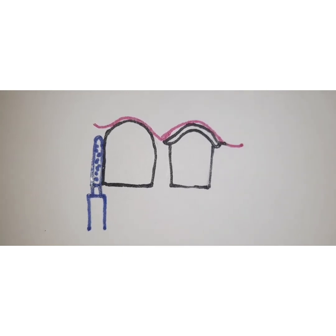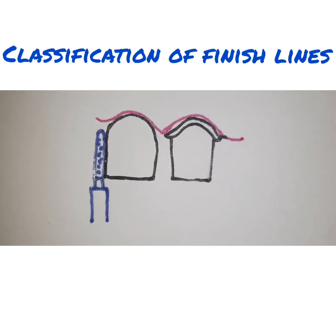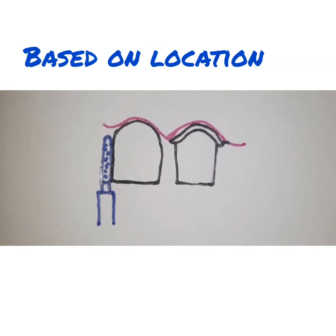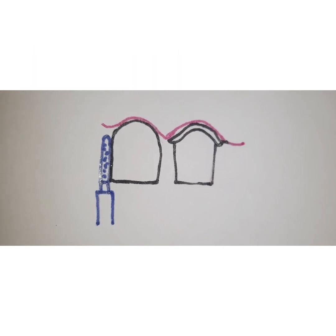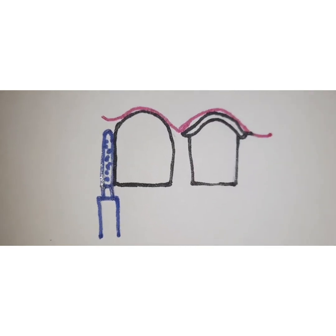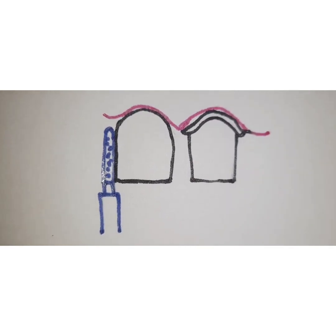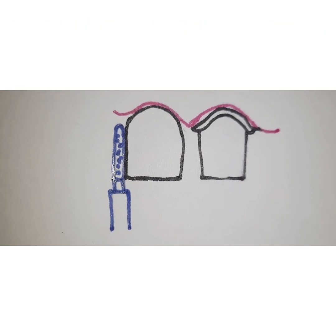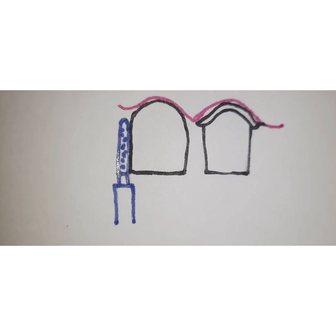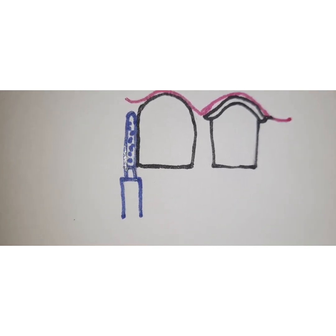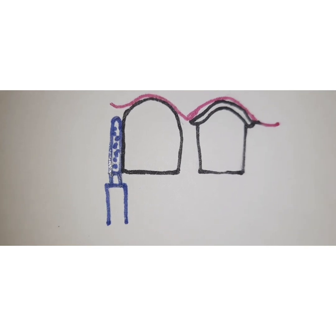Now let us look at the classification of finish lines. Classification based on location gives three types: subgingival finish line, supragingival finish line, and margin at the crest of the gingiva. Another classification is based on configuration and margin design, which gives five types: shoulder finish line, shoulder with bevel, chamfer finish line, knife-edge finish line, and feather edge finish line.